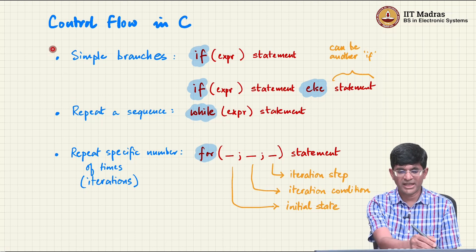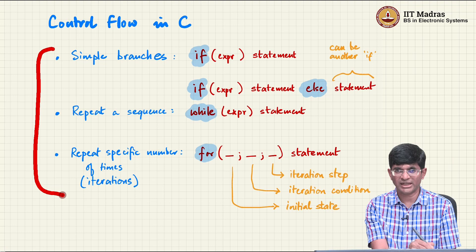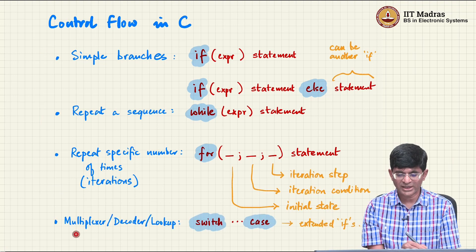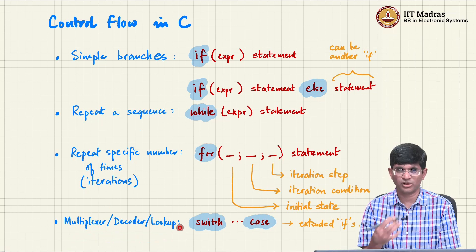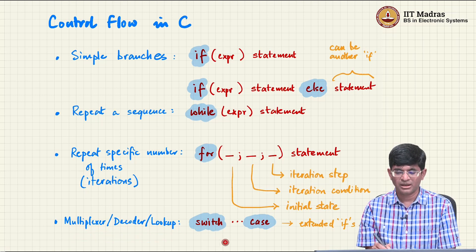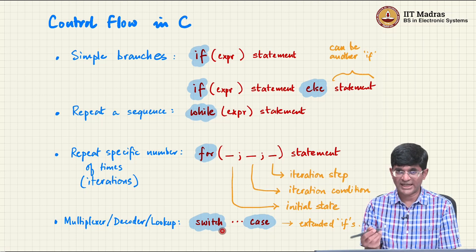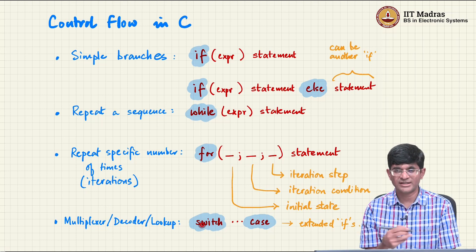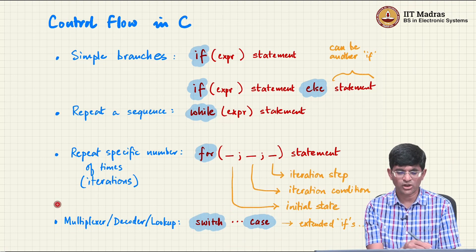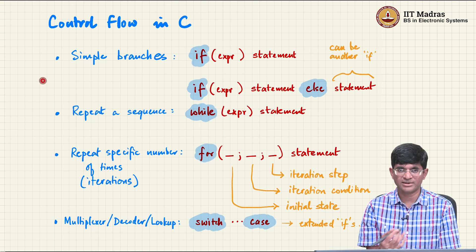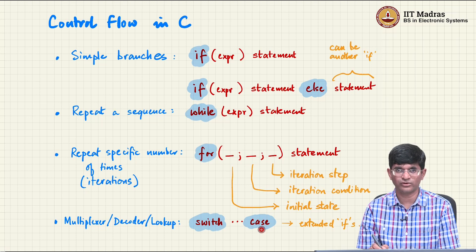These are the main control flow structures in C. In addition there is something I am calling a multiplexer, or a decoder or lookup table — essentially the repeated if-else, if-else, if-else pattern, which can be compactly represented using a switch-case statement. Since it is not really a different construct I am not treating it as a separate category, but we will look at examples as we go forward.